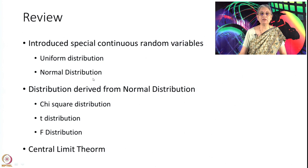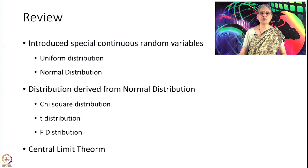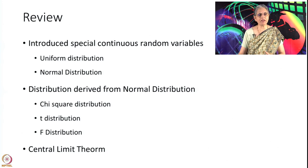Then we talked about in detail the normal distribution. We also discussed some distributions which are derived out of normal distributions. They do not largely naturally occur; however, they are useful to carry out certain inference on random variables which originate from the normal distribution. In the last session, we discussed the central limit theorem, which basically showed that normal distribution is kind of an all-pervading distribution.